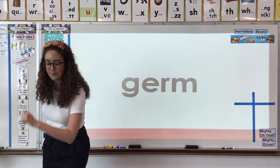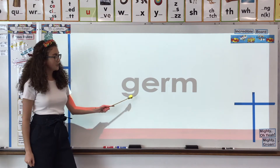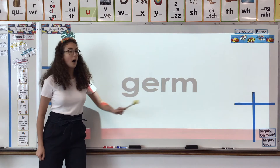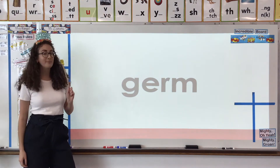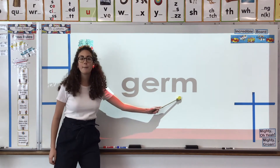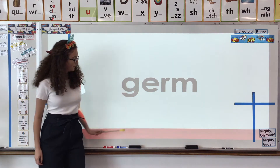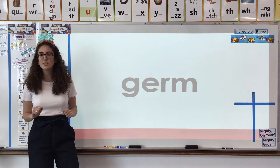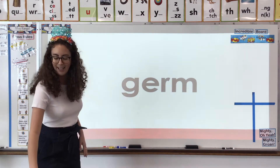Okay, next one. What do we got? A G and there's an E — G with E. Germ. What sound is G making? The soft sound because there's an E behind it.